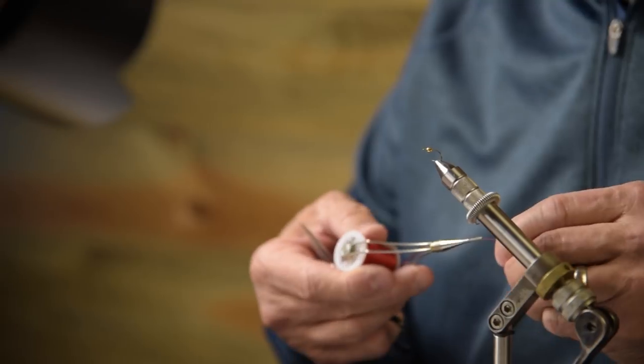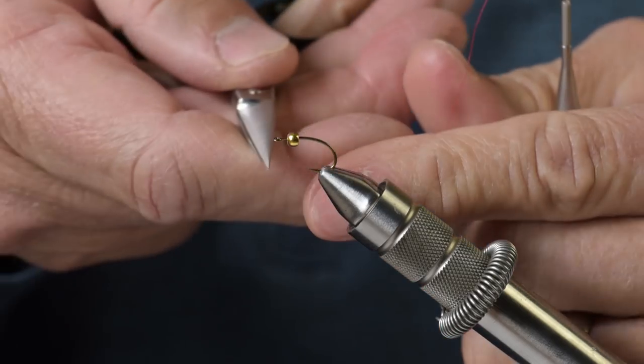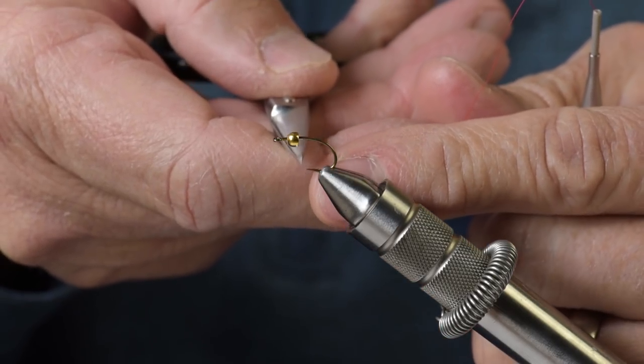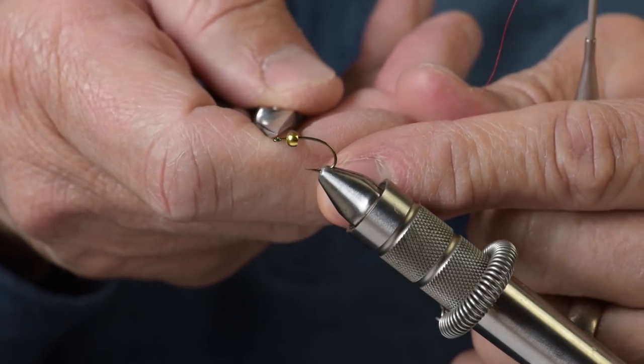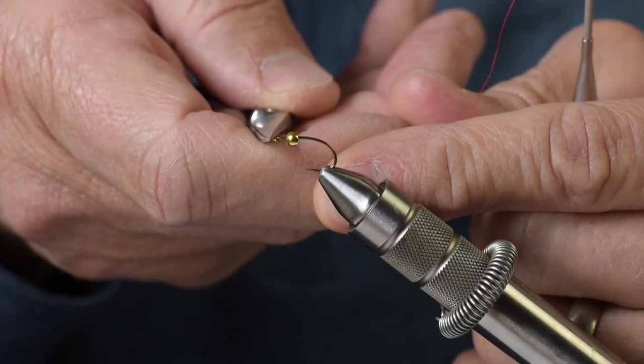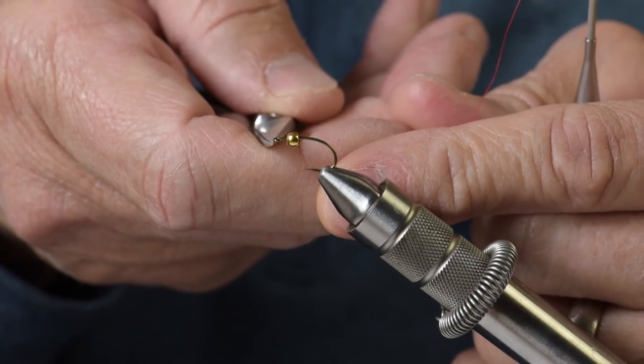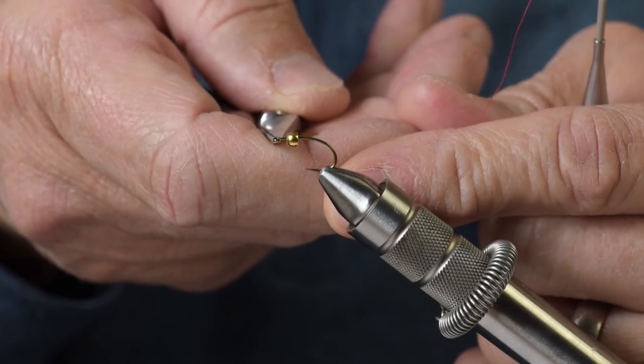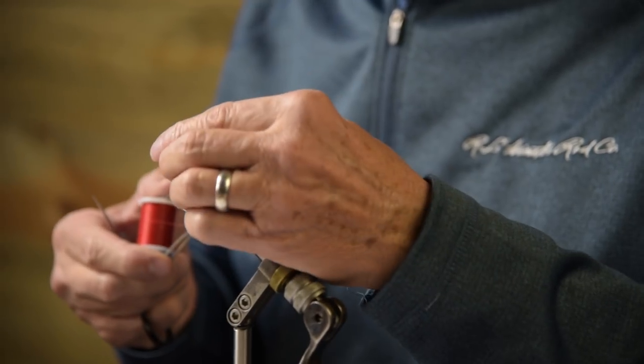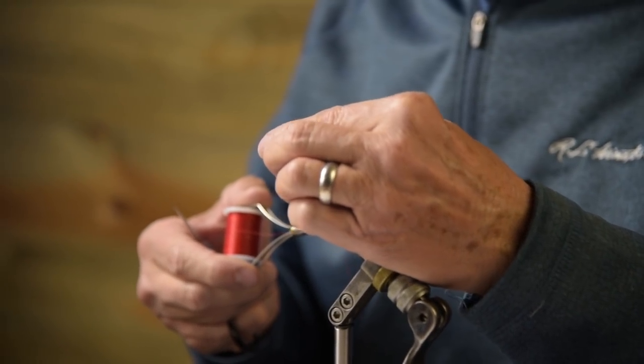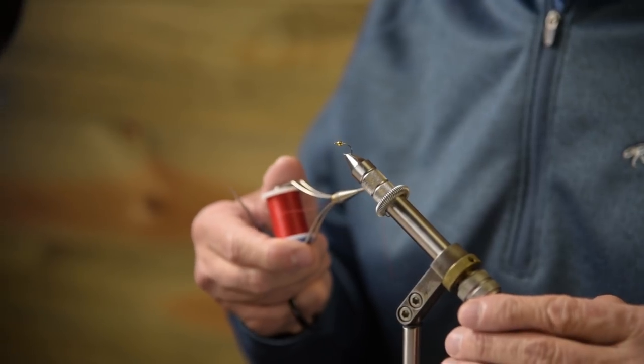What I do like about the straight eye is it gives me a little bit more of a hook, a little bigger gape. And I think if you do like to swing this fly, especially at the end of the drift, I think a straight eye or a slight up eye tracks a little better in the water. So that's why I'm going to go with this one.